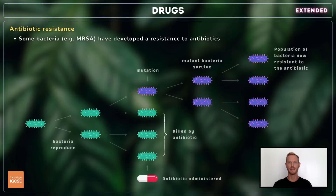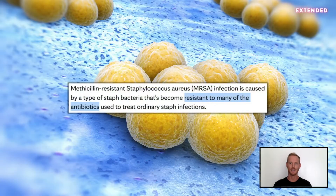When exposed to an antibiotic, a bacterium will occasionally mutate and develop features that allow it to survive. The bacterium can then divide, leading to the build-up of a resistant population. MRSA is an example of one type of bacteria that's developed resistance to several widely used antibiotics.